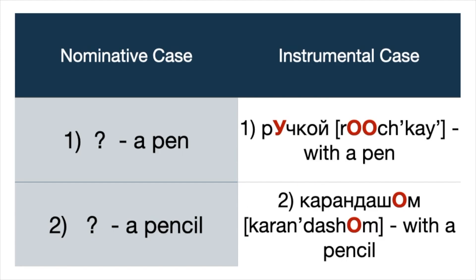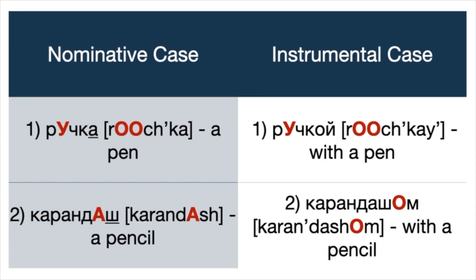Pause the video and remember the nominative forms of these words: ручкой and карандашом. Correct! Number one: ручка — a pen. Number two: карандаш — a pencil. -ом and -ой are the endings of the instrumental case. So, if you want to say that something is made or done with something, with the help of something, by means of something, then you use an object or instrument in the instrumental case.